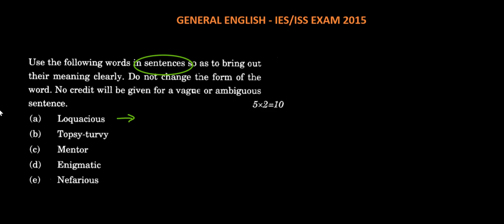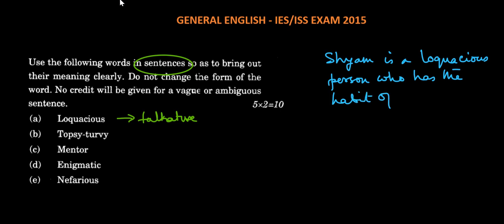The first word is loquacious. Loquacious means talkative, a person who talks a lot. The sentence could be: Sham is a loquacious person who has the habit of talking unnecessarily without any reason or for no good reason.